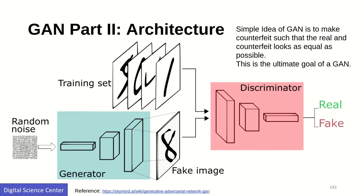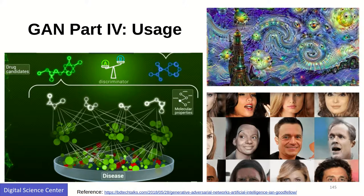At one point, the generator creates an output which the discriminator cannot discriminate whether it's a real one or a fake one. These are some examples of GAN usage.